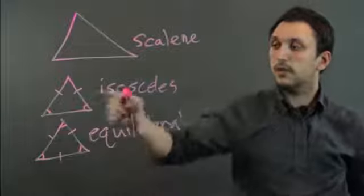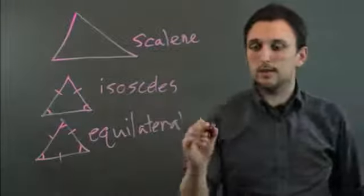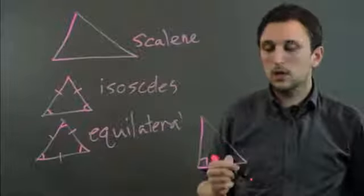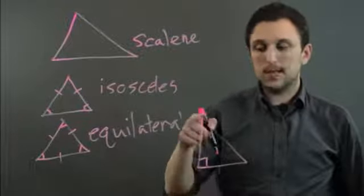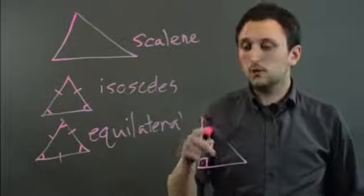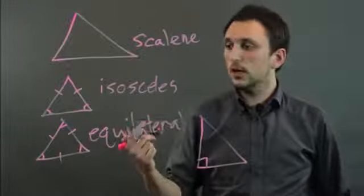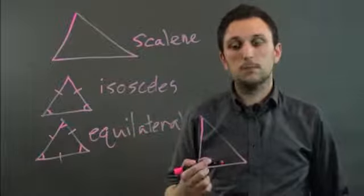We also have the isosceles right triangle, or any kind of right triangle, which involves one right angle. The other two can be anything and they have to be acute. So acute would be anything less than 90, and obtuse is anything more than 90, but less than 180.